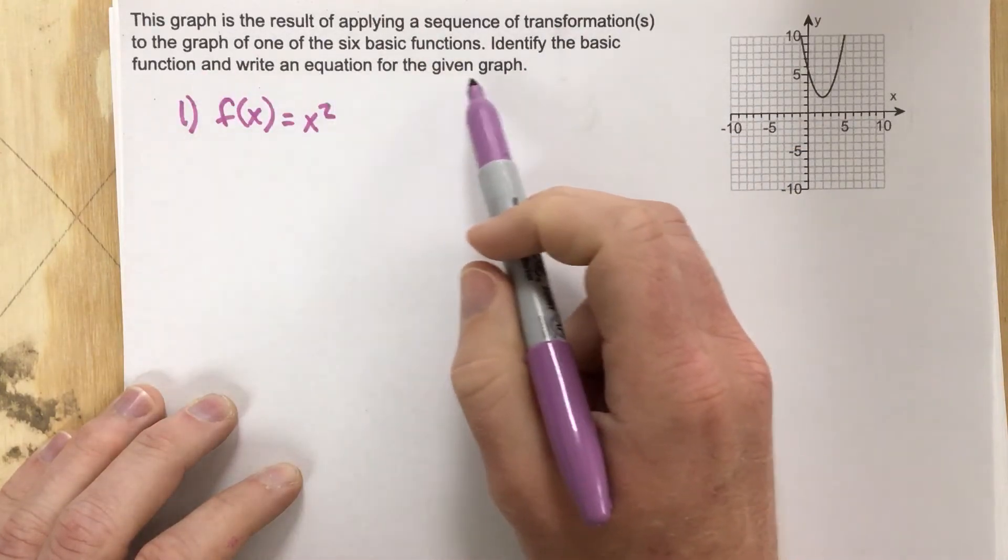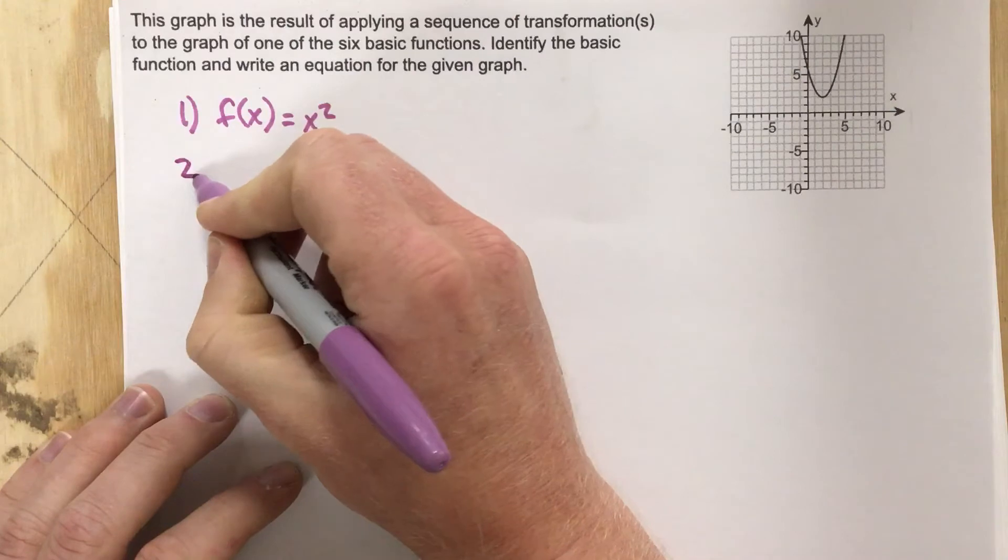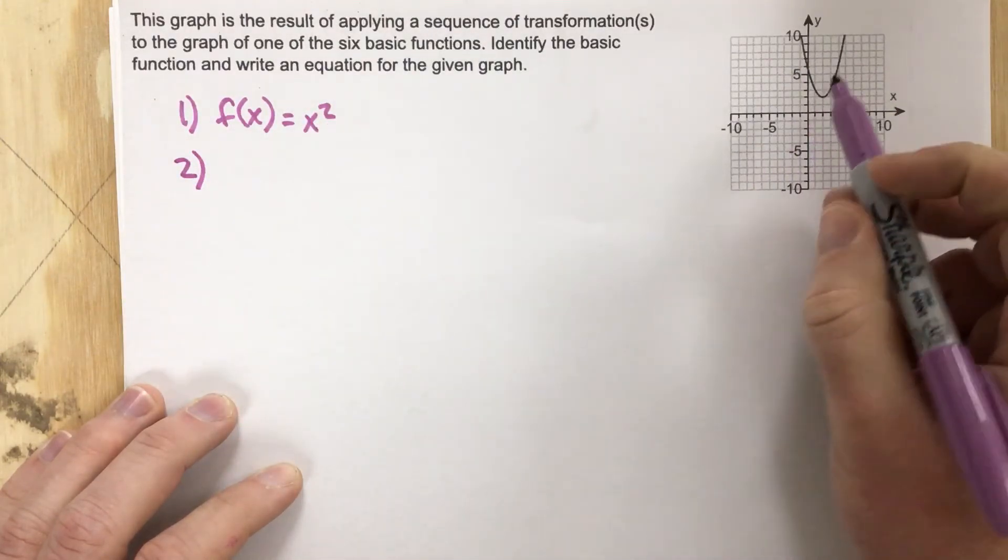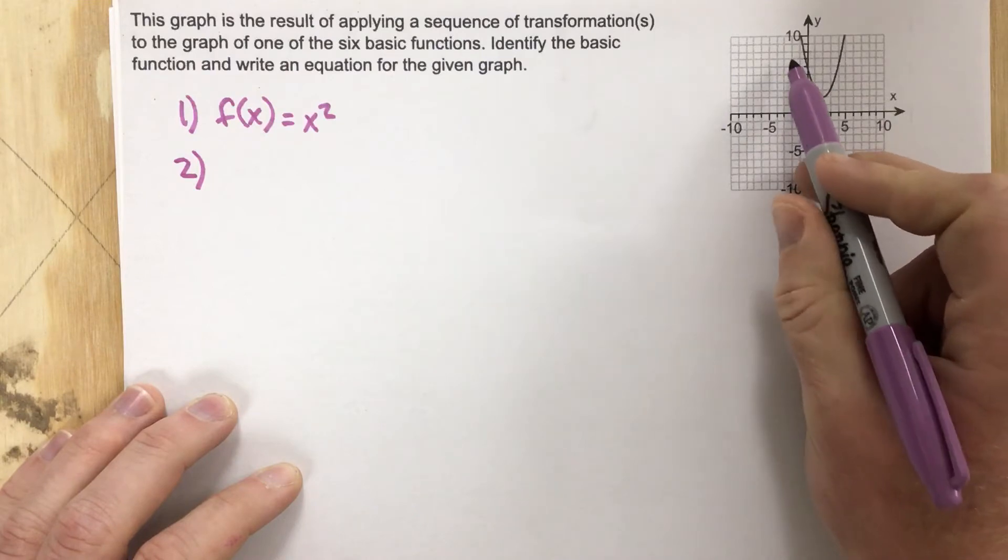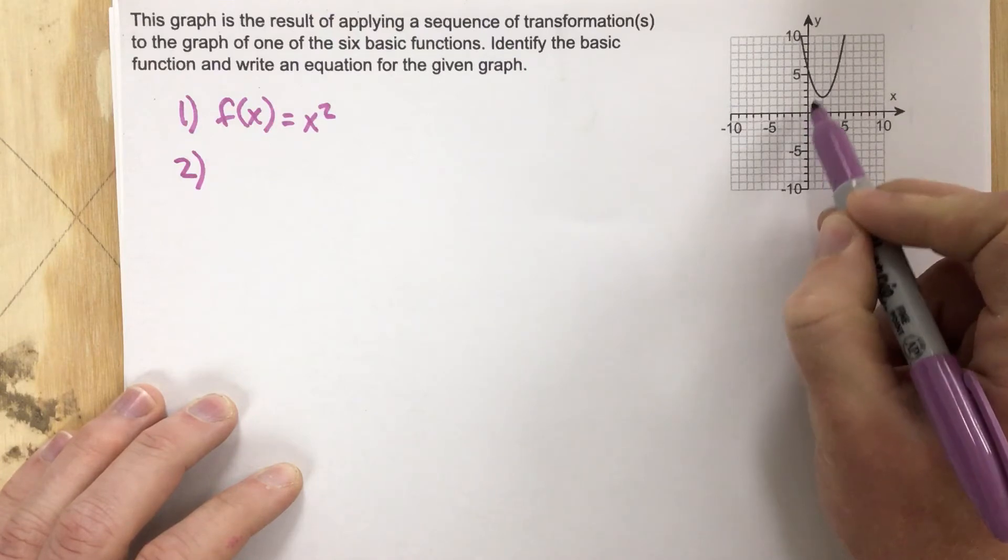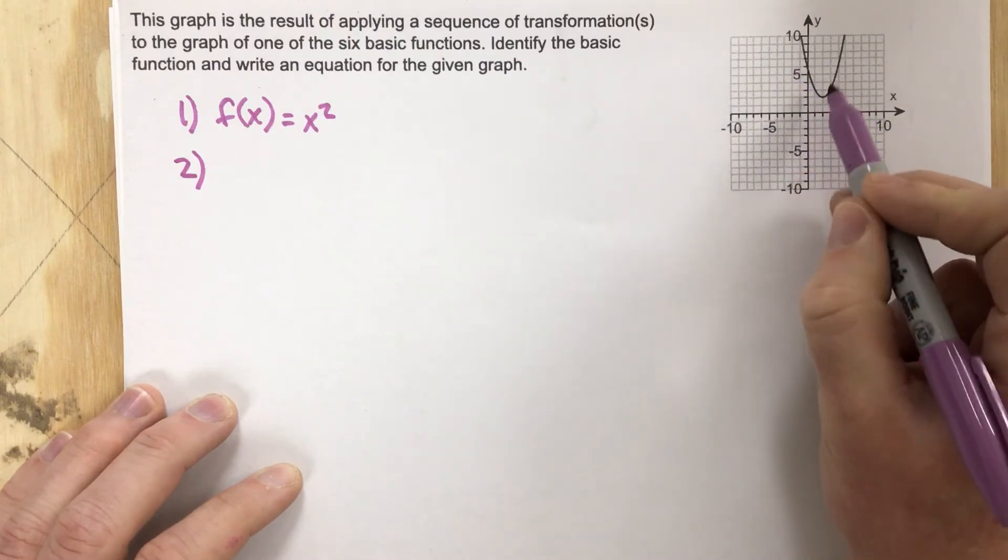Now it says write an equation for the given graph. So for part two we need to identify what has happened in this problem. Well, the parent function would be located at the origin. That's where the vertex would be located for the quadratic if it were the parent function.